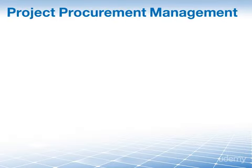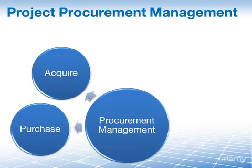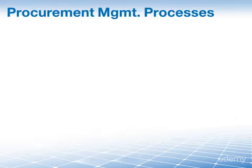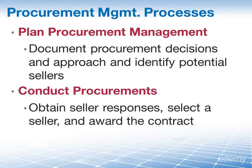Let's do the overview. Project procurement management includes the processes that are necessary to purchase or acquire products, services, or results that are needed from outside of the project team. Procurement is all about buying things from the outside. The first process is plan procurement management — documenting project procurement decisions, specifying the approach, and identifying potential sellers. Our second process is conduct procurements: obtaining seller responses, selecting a seller, and awarding a contract.